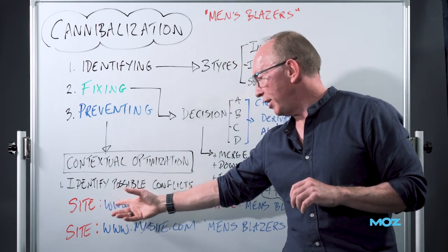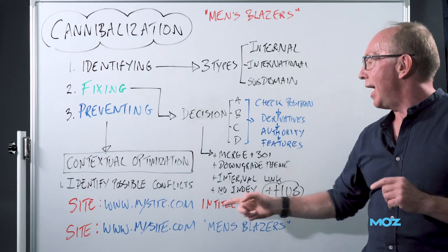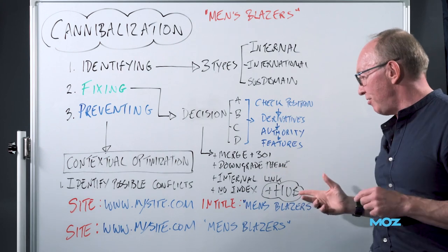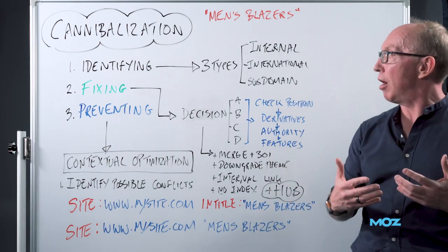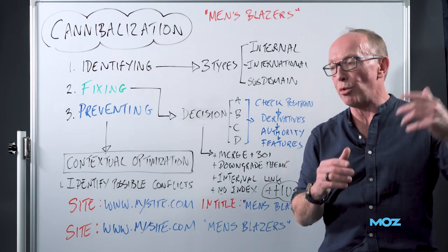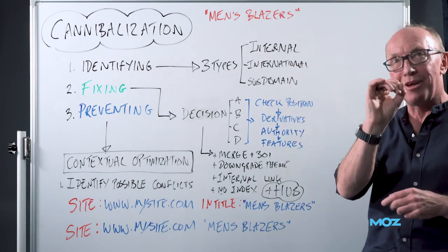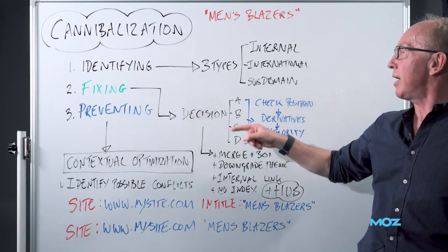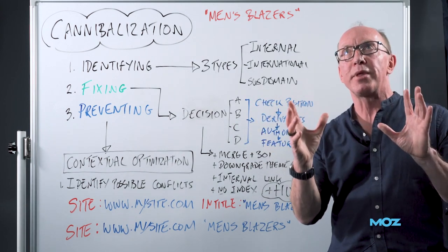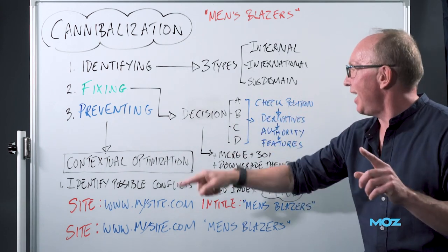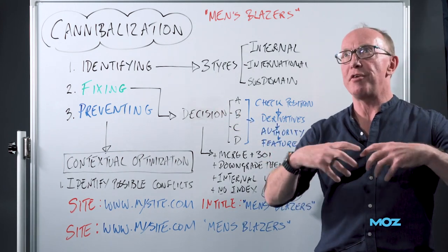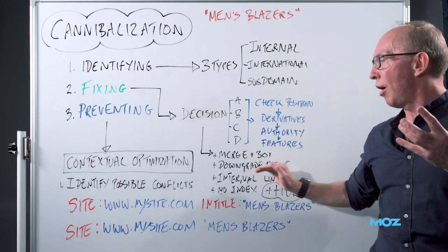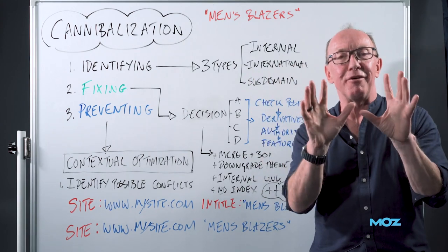Use the site operator: site:www.mysite.com intitle:"men's blazers". That will return all the pages from your site in Google's index that have 'men's blazers' in the title — remember, the strongest theme. So you might find, before injecting new content, that you already have A, B, C, and D in your ecosystem. You then go back and make the decision. If this is a new piece of content, you can start to deploy one or more of these techniques to prevent cannibalization from happening in the first place. Honestly, cannibalization is causing so much loss of visibility — I'd estimate around 40% of content sitting on page two and three is down to this.